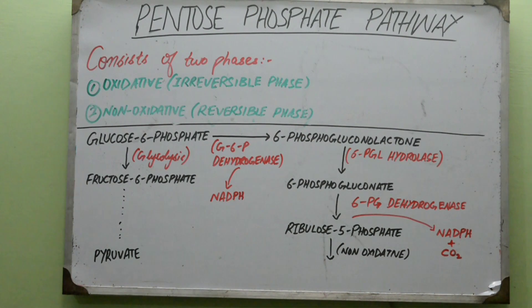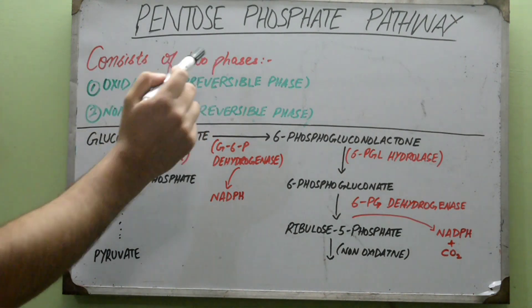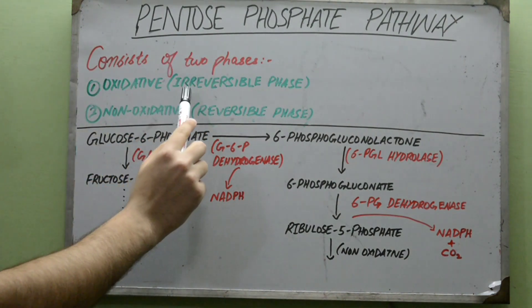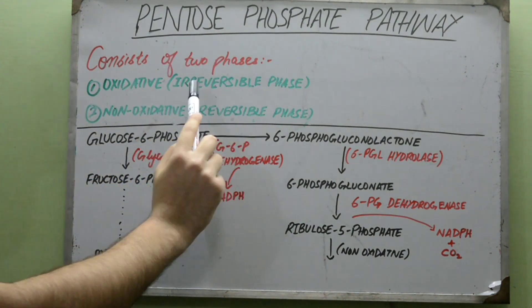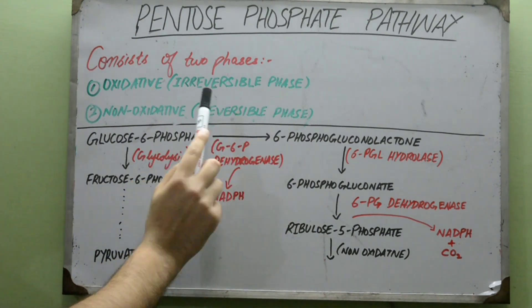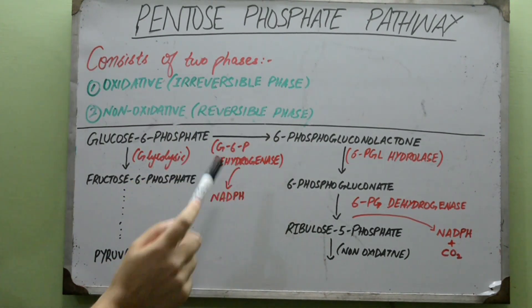So how does it all happen? This pentose phosphate pathway consists of two phases: an oxidative or irreversible phase, and a non-oxidative which is a reversible phase.